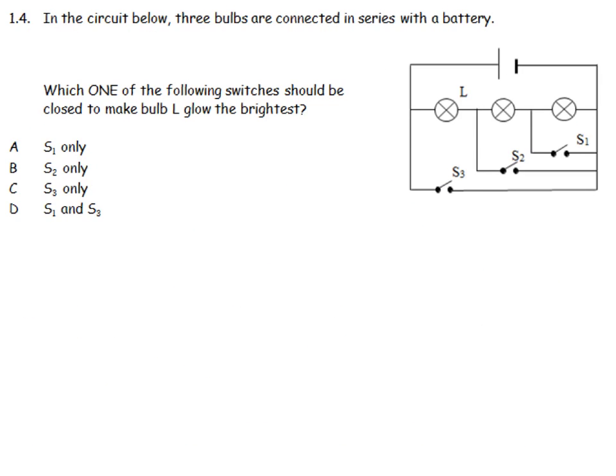In the circuit below, three bulbs are connected in series with the battery. Which one of the following switches would be closed to make L glow the brightest? So we want as few light bulbs as possible going. If I were to close switch 1, I would find that my current would be able to go along here, through L1, along, through L2. And here it would try and sneak off over there because that would be easier.